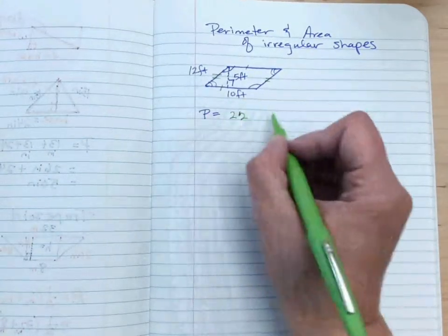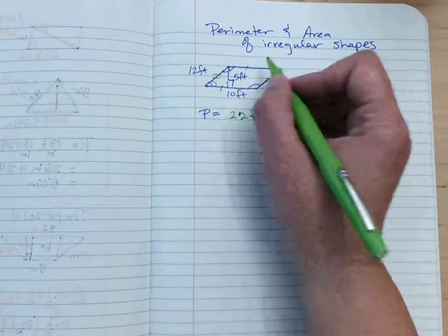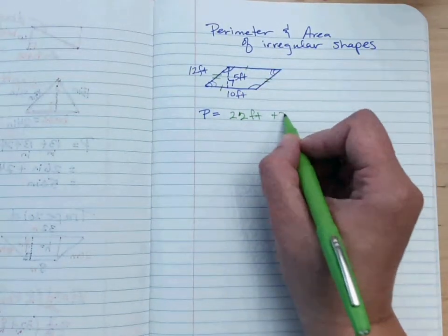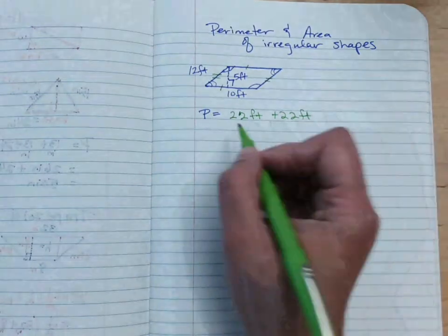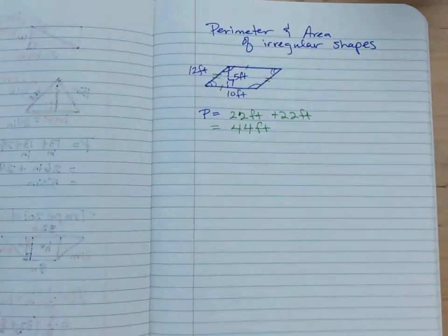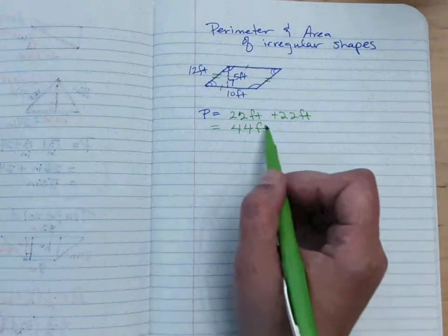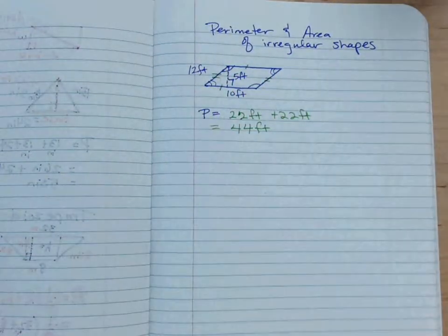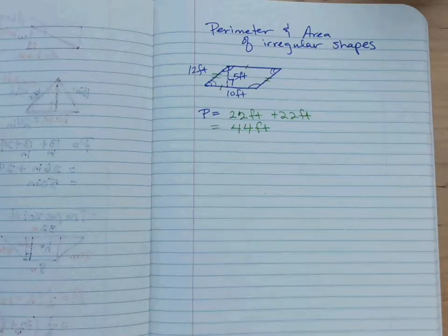So 12 plus 10 is 22, right? But then we have the other side, so that's 22. And so total, you have 44 feet. Now remember the feet, it's just feet, because this is a linear distance around the outside. Perimeter is the outside of the figure.